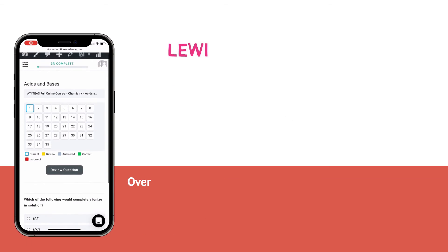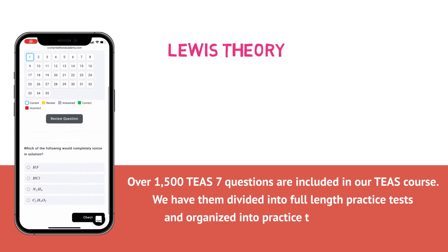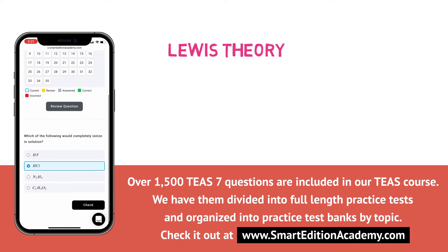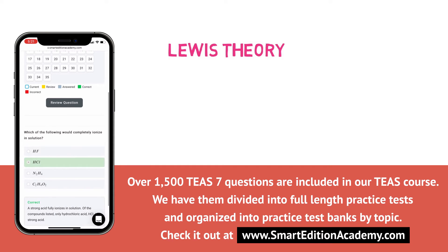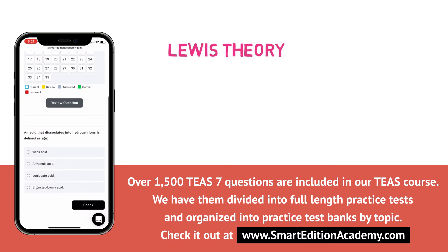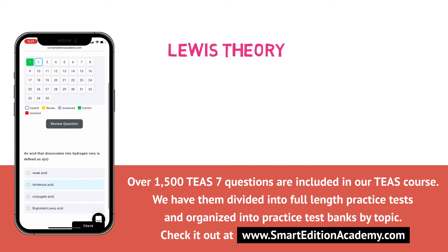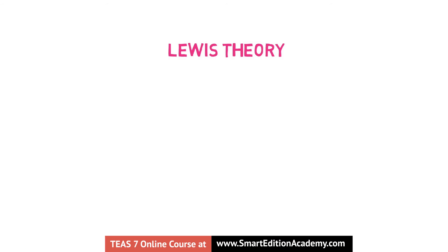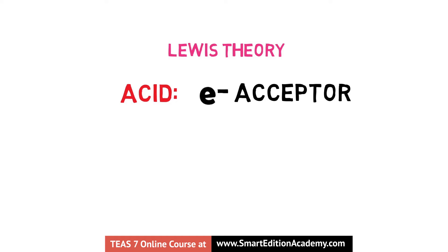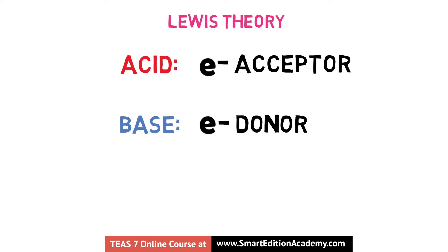Now there's one final theory called the Lewis theory, but this theory is very similar to the Bronsted-Lowry theory. Rather than defining acids and bases upon proton donation or acceptance, the Lewis theory defines these compounds based on electron movement during an acid-base reaction. In the Bronsted-Lowry theory, an acid was a proton donor — a Lewis acid is considered an electron pair acceptor. And alternatively, a Bronsted-Lowry base is the proton acceptor, while a Lewis base is an electron pair donor.